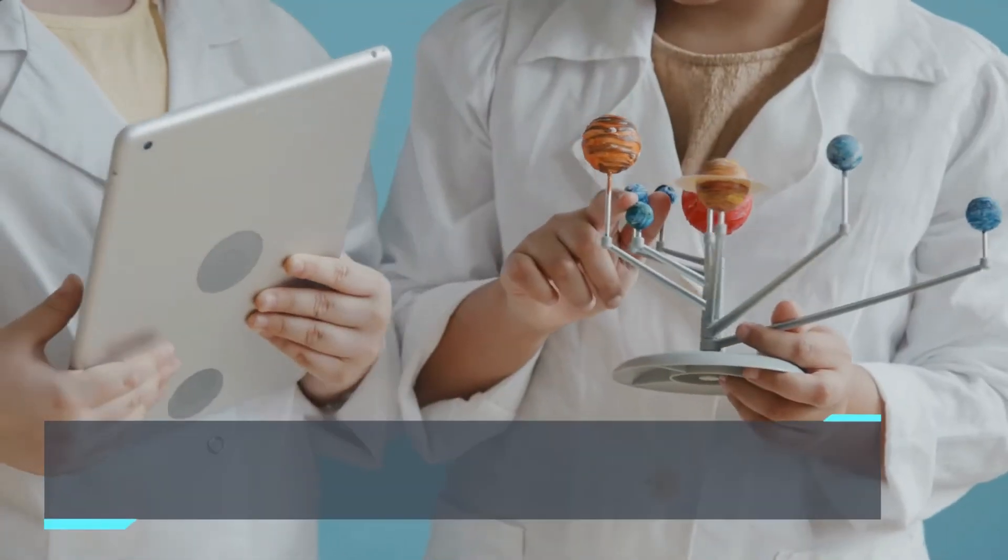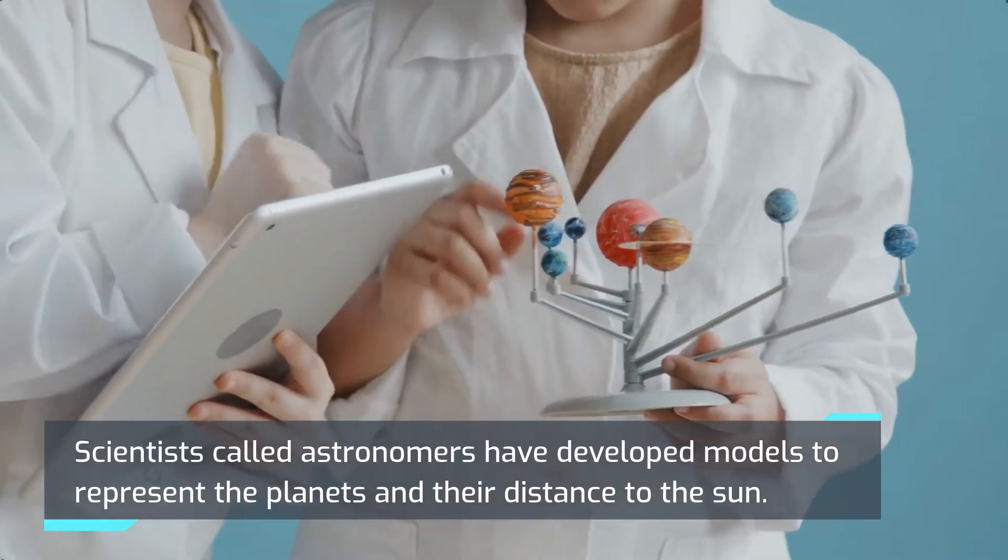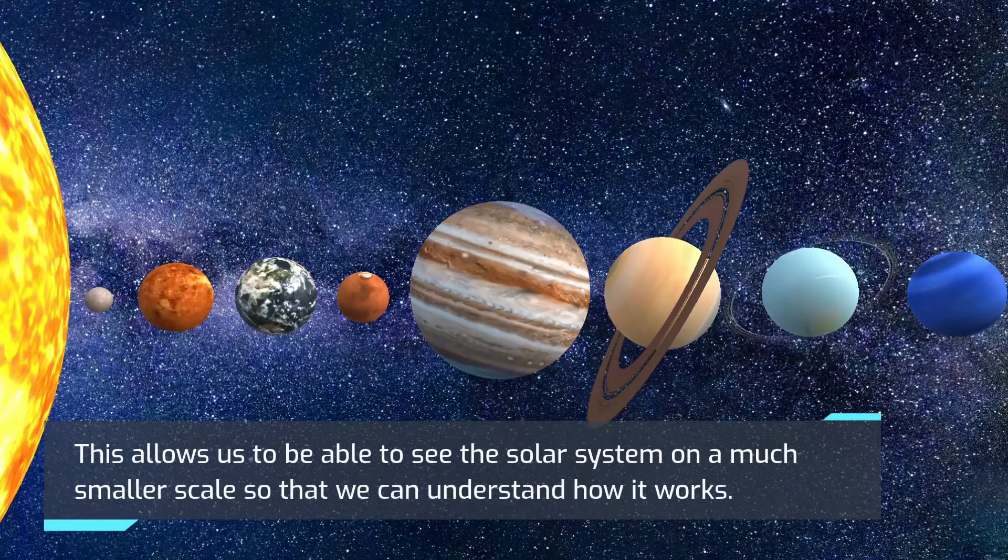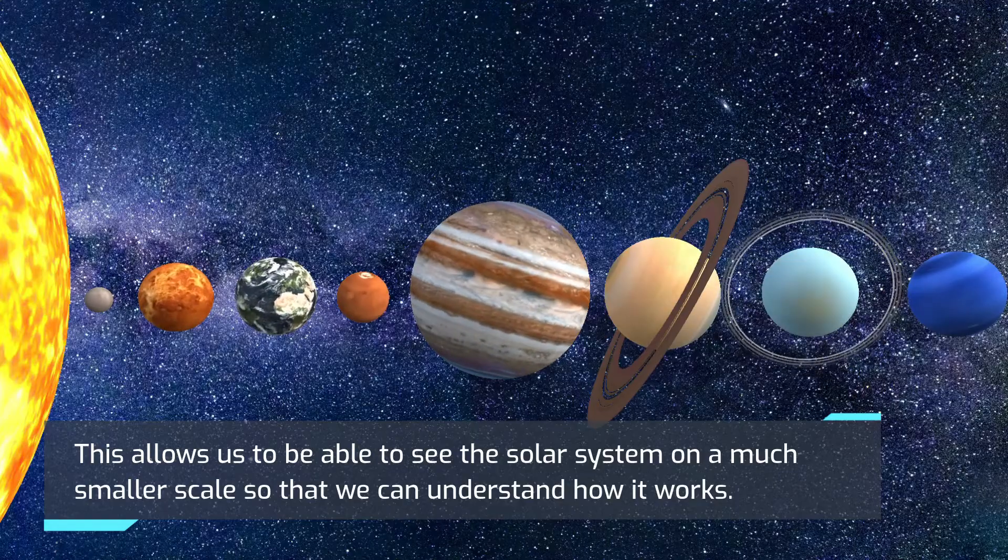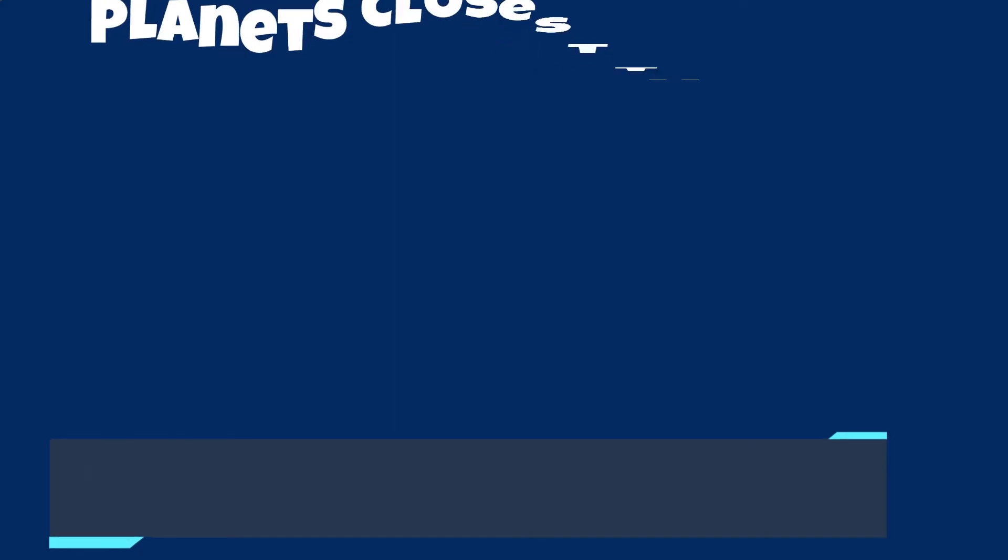Scientists called astronomers have developed models to represent the planets and their distance to the Sun. This allows us to see the solar system on a much smaller scale so that we can understand how it works.